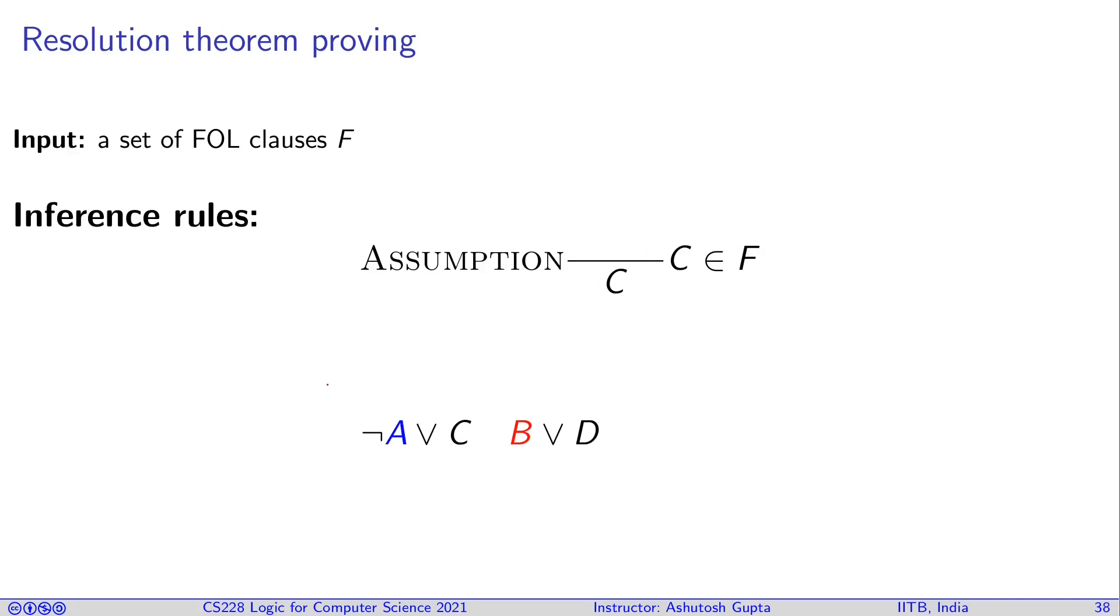So how do we adopt resolution? Suppose you have two clauses like this one and one that, and you have B and not A. So if A and B somehow can unify, then we can conclude C or D under the context of unification.